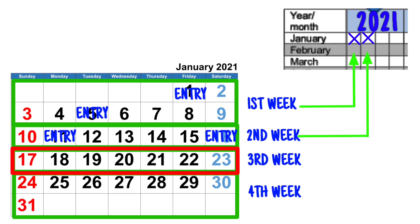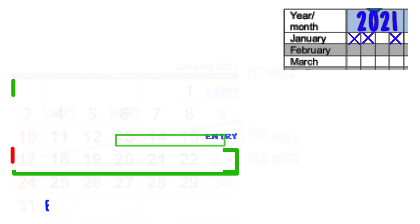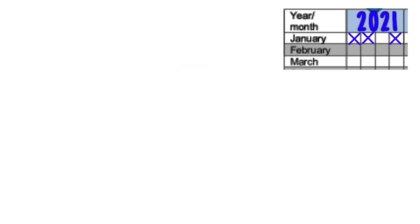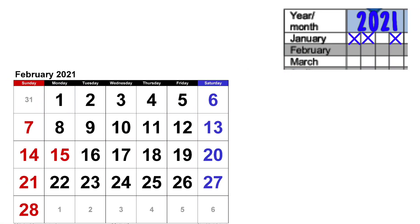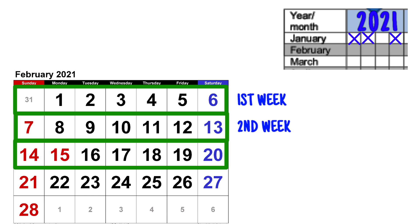If you don't get any entries in the third week of the month, leave that box blank. If you get two entries in the fourth week, mark X on the fourth box. For February 2021, count the first, second, and third weeks normally, then combine the last fourth and fifth days to make the fourth week.